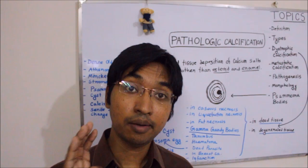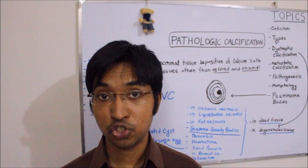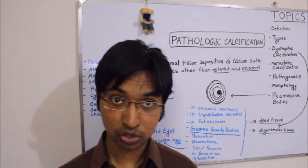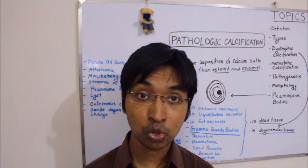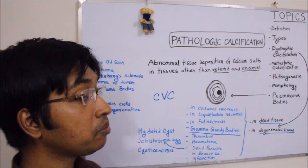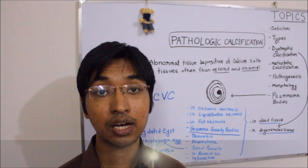Atheroma usually contain, among other things, macrophages, lipid particles, cell debris, and fibrous tissue. Sometimes such atheroma can undergo calcification, and usually calcification is common in atheroma of the aorta and coronary arteries. The next example is Mönckeberg's medial sclerosis.